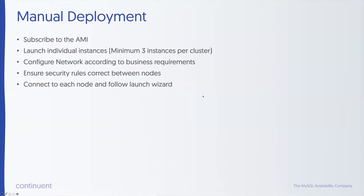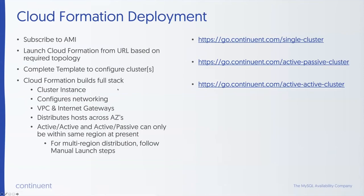For manual deployment: subscribe to the AMI, launch as many individual instances as you need — remembering three instances per cluster — manually configure the network according to your business requirements, make sure all security rules are set up between nodes, then connect to each node, follow the launch wizard, and your cluster is running.